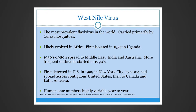West Nile is the most prevalent flavivirus in the world, carried primarily by Culex mosquitoes. It likely evolved in Africa and was first isolated in 1937 in Uganda. Between the 1950s and 1980s it spread to the Middle East, India, and Australia, with more frequent outbreaks starting in the 1990s. It was first detected in the U.S. in New York City in 1999, and by 2004 had spread across the contiguous United States, Canada, and into Latin America. Human case rates are highly variable year to year.